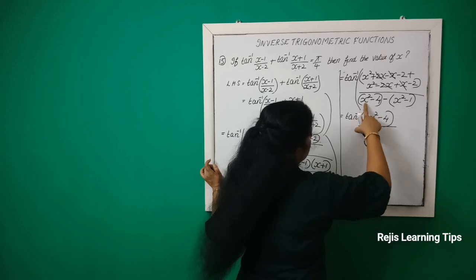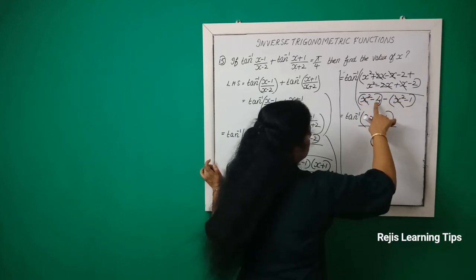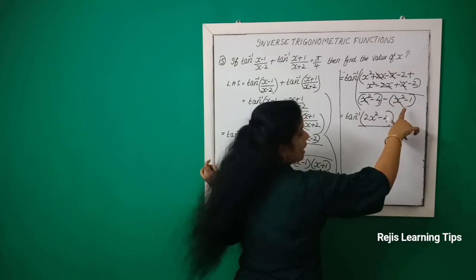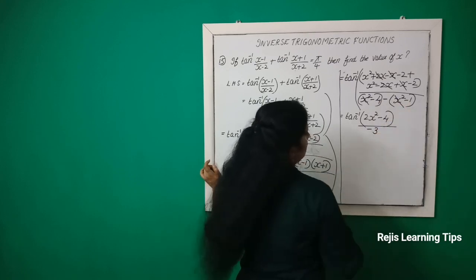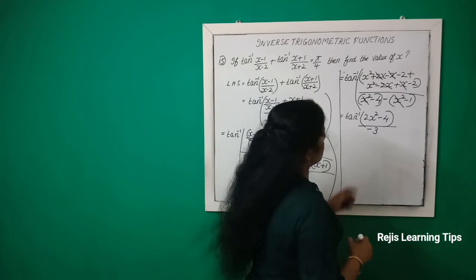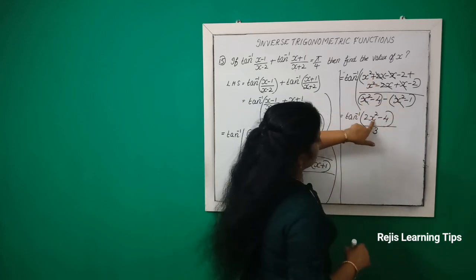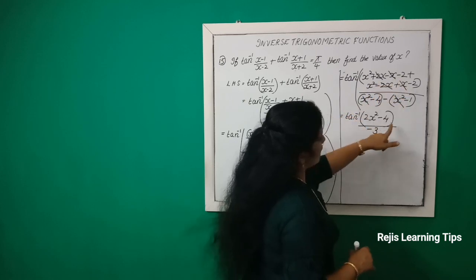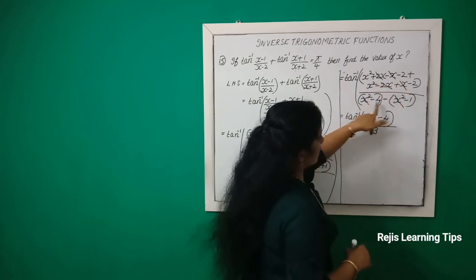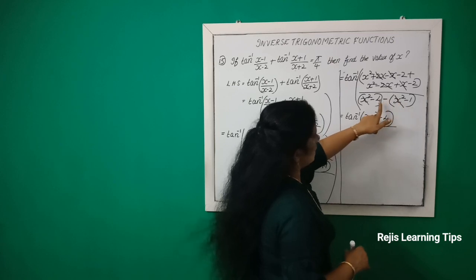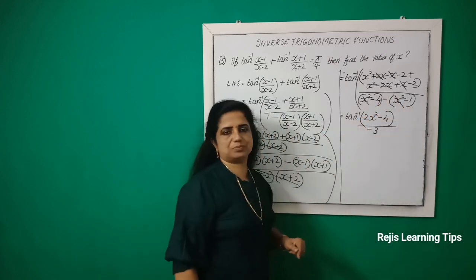Opening the bracket in the denominator: x²−x² cancels, then −4+1 = −3. In the numerator, x²+x² = 2x², and −2+(−2) = −4. So we get 2x²−4 divided by −3.